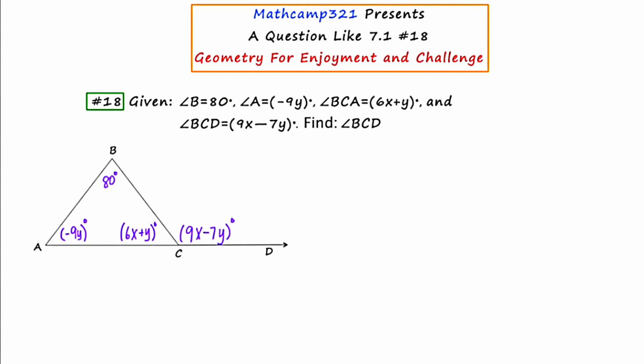And with this theorem, I can say that 80 plus 6x plus y minus 9y equals 180. Now, of course, I can clean this up a little bit and I can say 6x minus 8y equals 100.